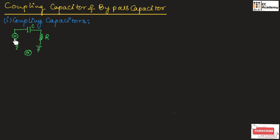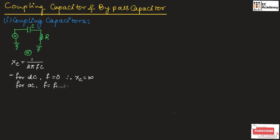This figure shows an AC source connected to a capacitor and resistor. The reactance of the capacitor is inversely proportional to the frequency. So we can write Xc is equal to 1 divided by 2 pi FC. We know that for a DC signal, the frequency will be equal to 0. Therefore, the reactance will be equal to infinity. And for an AC signal, the frequency value will be finite, therefore the reactance value will also be a finite value. Reactance is nothing but the resistance offered by the capacitor, and it is inversely proportional to frequency.